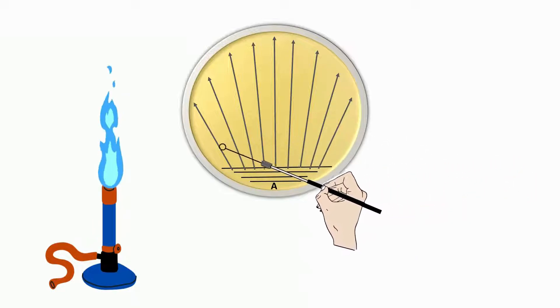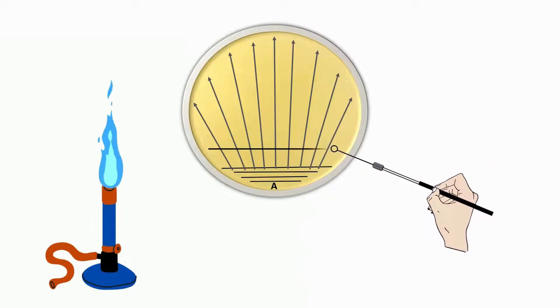Now streak horizontal lines near above area A using the sterile loop.